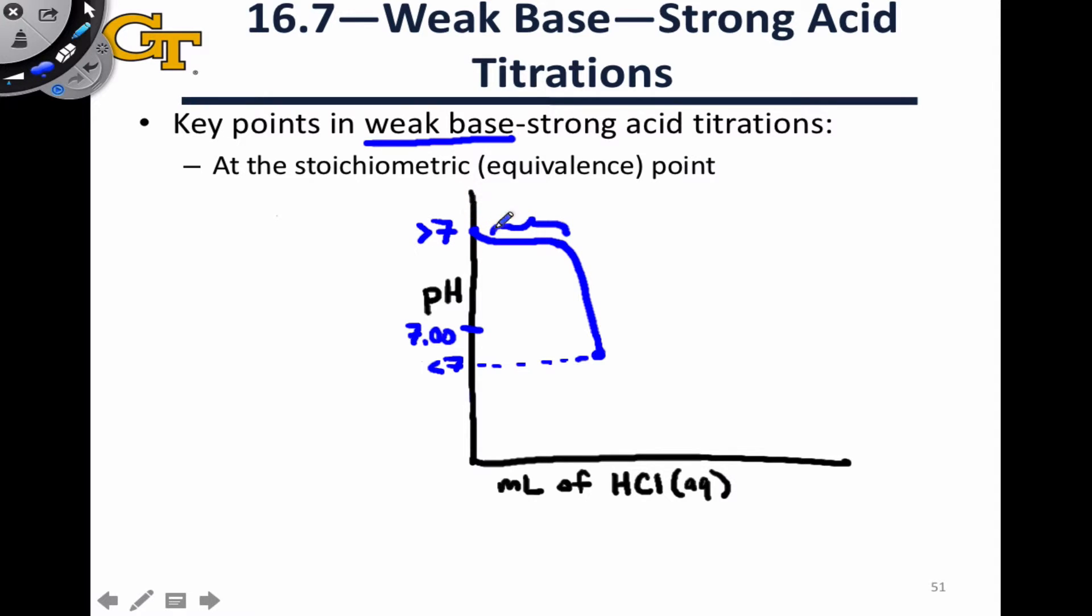So at the initial point we started with mostly B, with a little bit of the conjugate acid and hydroxide in there due to partial dissociation of the weak base. At this stoichiometric point, we've added enough acid to completely consume all of that B, and so we're left with only HB+, at least before we turn on the reaction of this species with water.